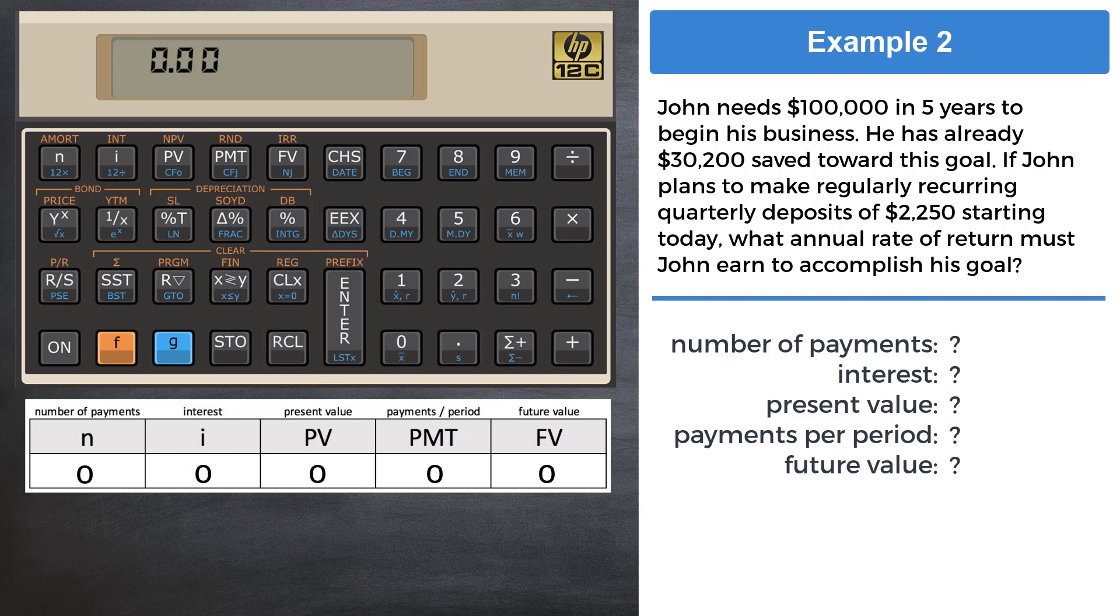This question, we can identify present value and future value easily. The rest we need to be careful of two things. First, the question uses the words starting today, which means that the quarterly deposits are made at the beginning of each period, and that makes a difference. Let's take care of that immediately.